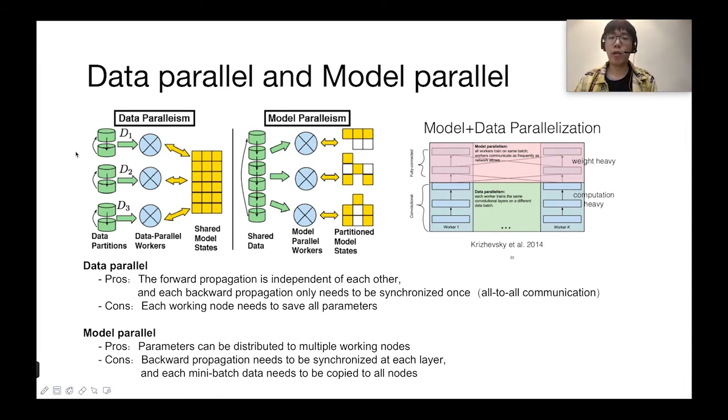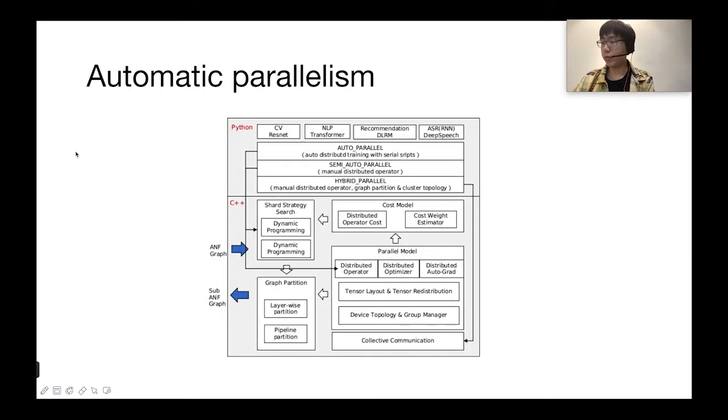Let's talk about parallelism. There are two ways of parallelism in MindSpore: data parallel and model parallel. For data parallel, the dataset is partitioned, and each worker receives different dataset with the same shared model. Model parallel partitions the model. Each worker receives the same dataset but with different models. For data parallel, the forward propagation is independent of each other, and each backward propagation only needs to be synchronized once, but each working node needs to save all the parameters. For model parallel, parameters can be distributed to multiple working nodes, but backward propagation needs to be synchronized in each layer, and each mini-batch data needs to be copied to all the nodes.